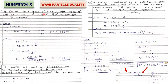Next: an electron has speed 600 m/s measured with an accuracy of 0.005%. The uncertainty in velocity Δv = 0.005% of velocity = (0.005/100) × 600 m/s. Now use the uncertainty principle Δx · Δp = h (with Δp = m·Δv) to find the uncertainty in position Δx.